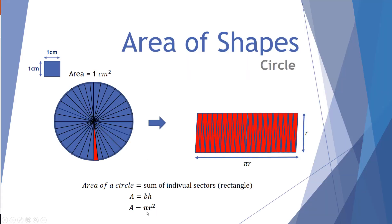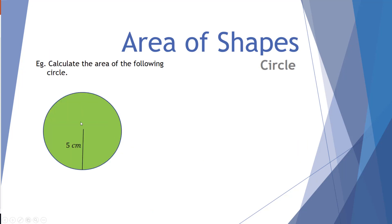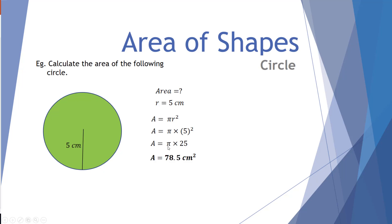Hopefully that video made sense in terms of working out the area of a circle using very small sectors. Let's work out the area of a circle of radius 5 centimeters. Area equals question mark, radius equals 5. The equation is area equals πr squared. The radius is 5; 5 squared equals 25. So the area is 25π. Pi is approximately 3.14 and goes on infinitely, so using a calculator, pi times 25 gives approximately 78.5 centimeters squared.